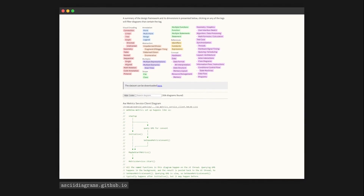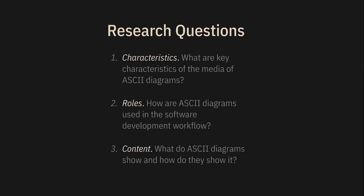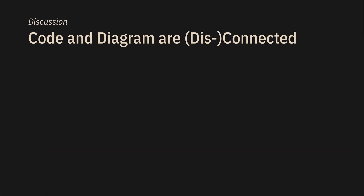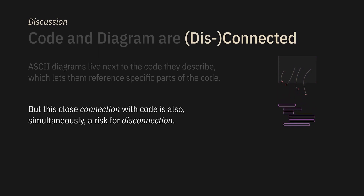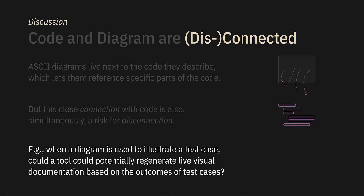There are a couple of common threads across our findings. One is that code and diagram have a close but fragile relationship. The diagrams sit in the code, so they can specifically reference parts of it, but this close connection is also at risk of disconnection. Participants expressed concerns about documentation becoming out of sync, and our IDEs are little help — they're completely oblivious to ASCII diagrams. Maybe we can investigate better tooling for making and maintaining connections between the code and the diagram. One specific situation encountered in both the interviews and content analysis was using the diagram to show the result of a test case — you can imagine a tool that could dynamically regenerate the diagram based on the actual outcome of the test.